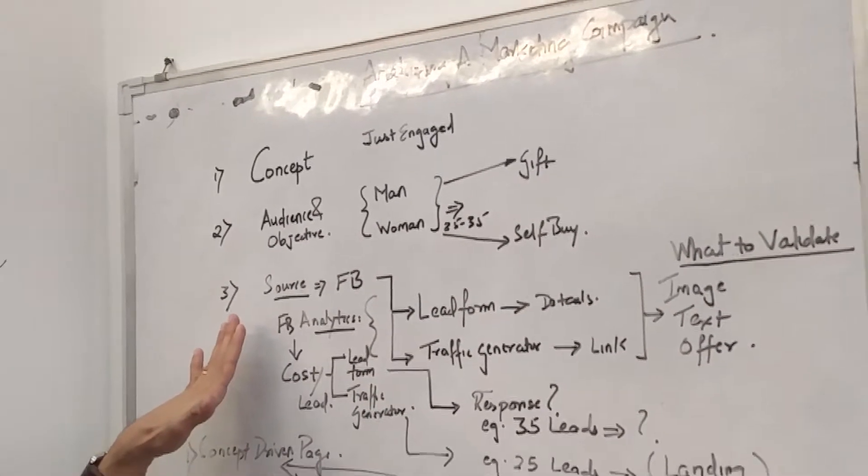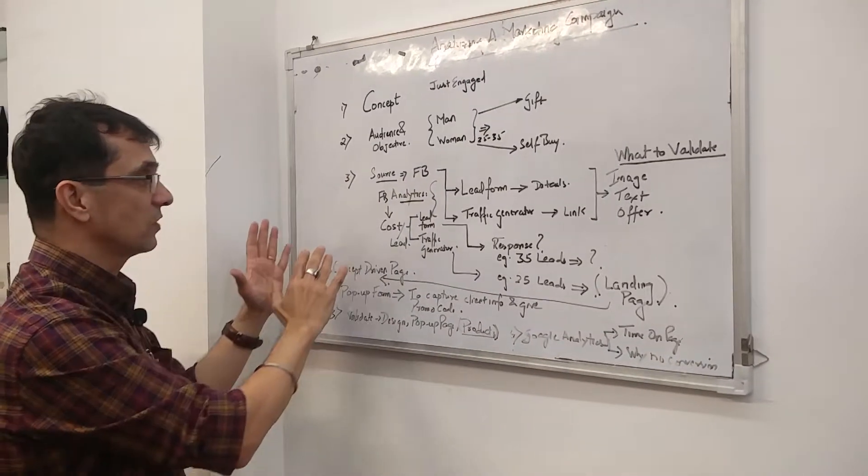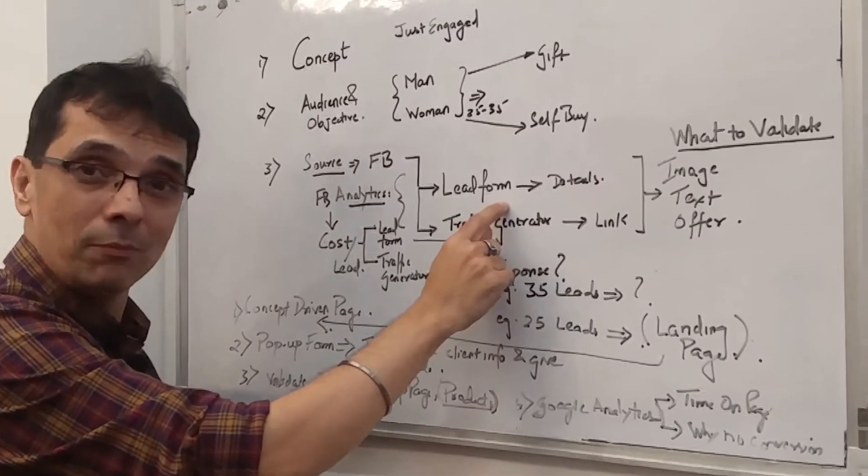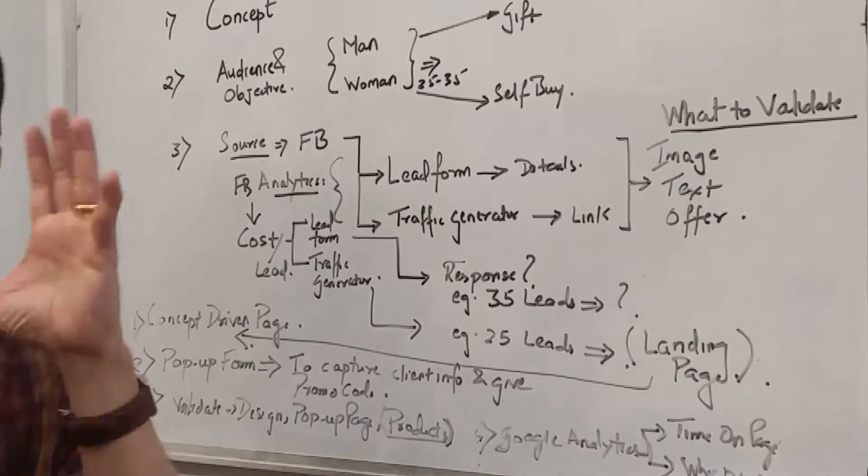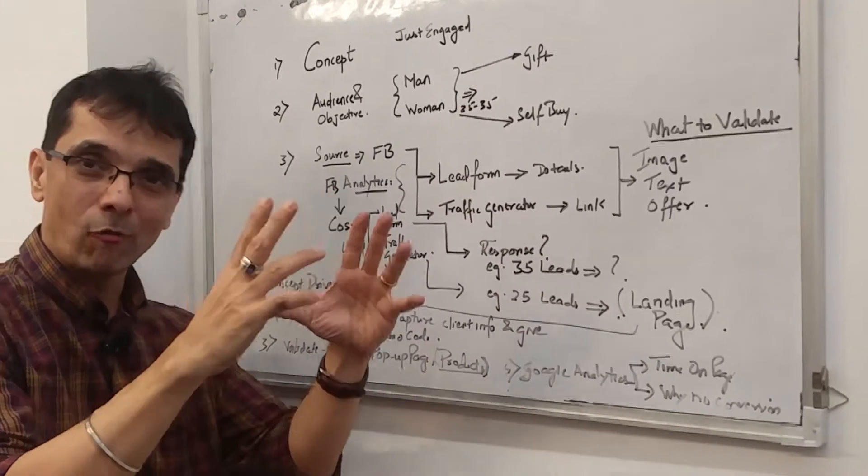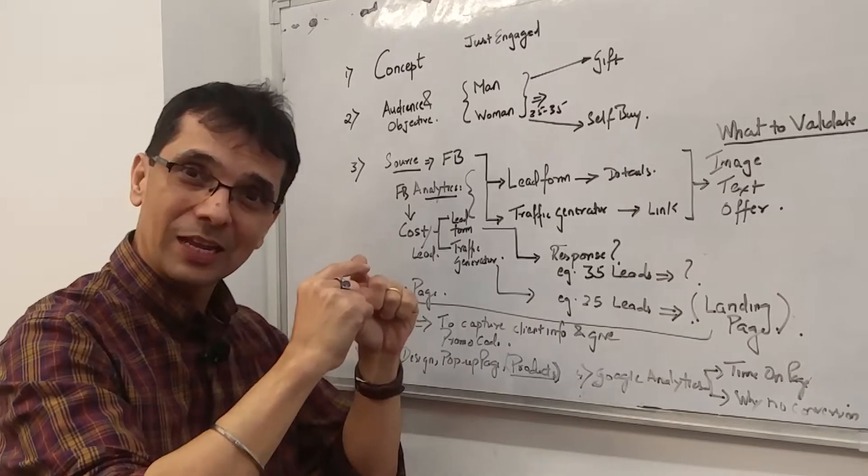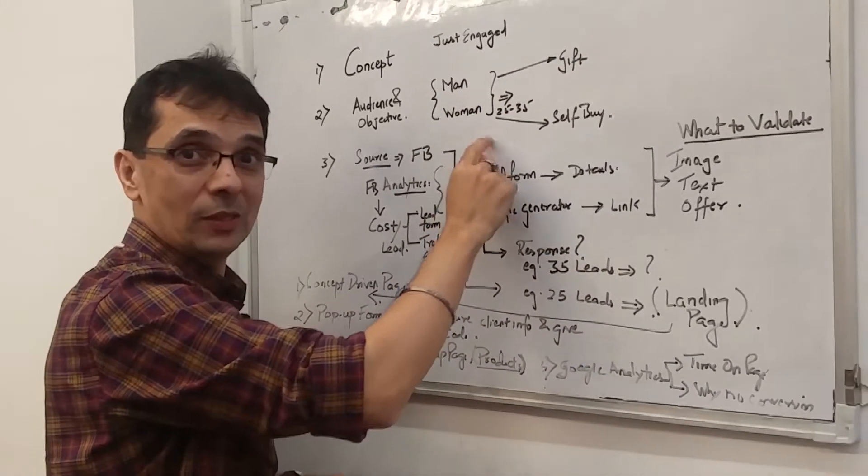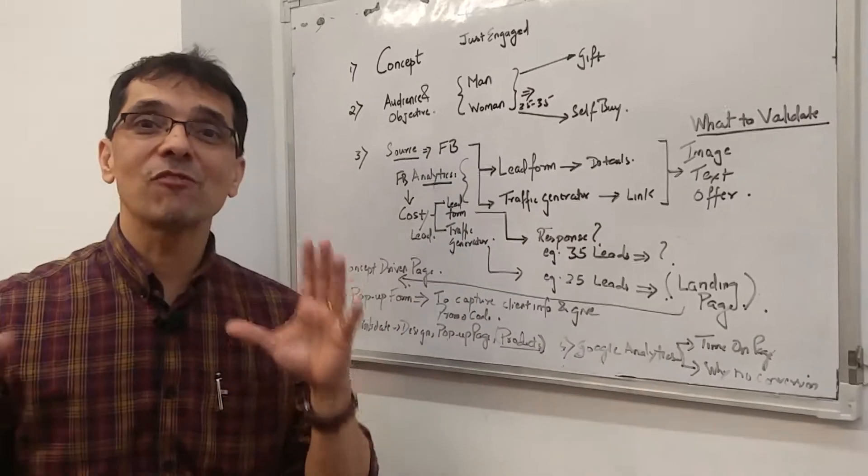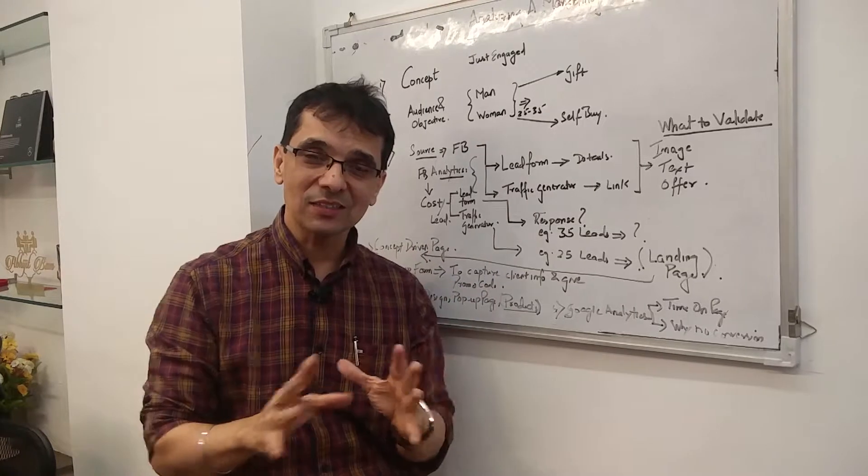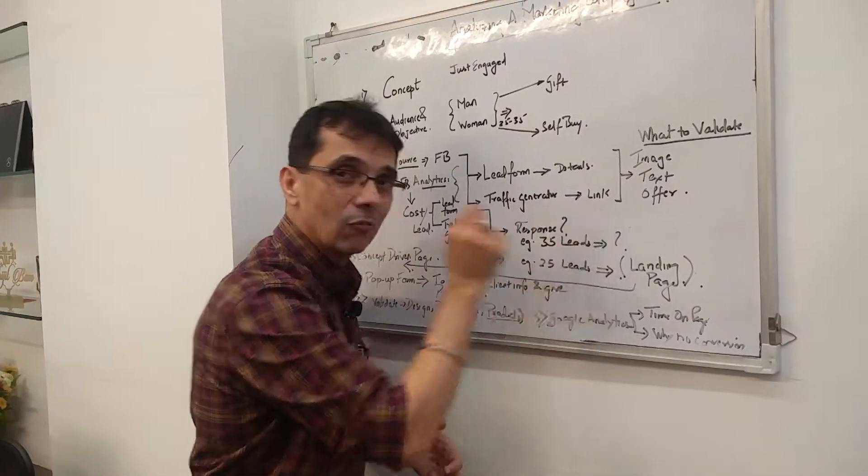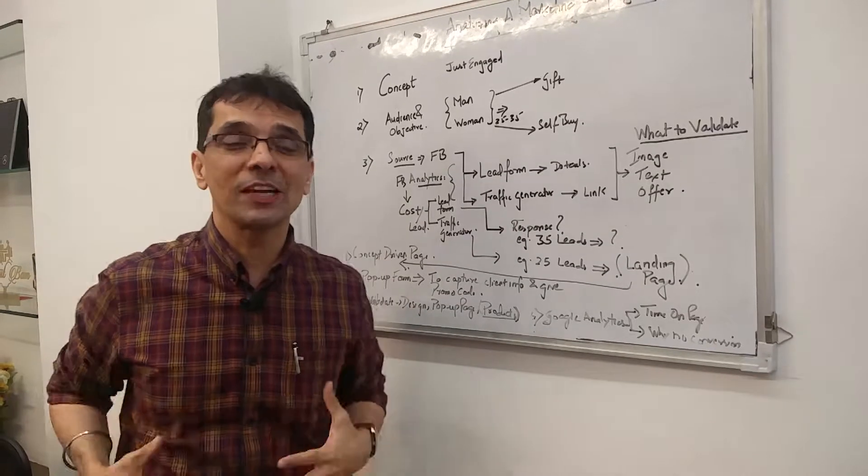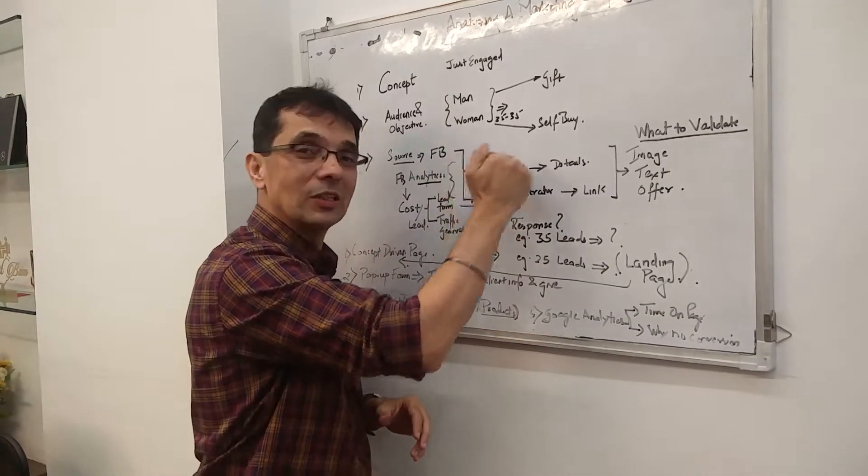What is the source to reach out to the campaign? Based on price points, we decided to use Facebook. Two options: lead form and a traffic generator. Based on the budget we had, the source was determined. Lead form is where you have a form, talk about the concept and capture their email and phone number so you can get back. The traffic generator is where after seeing the content, you click on a link which takes you to a landing page. You don't know what's going to work, so you test and spend your budgets between both.